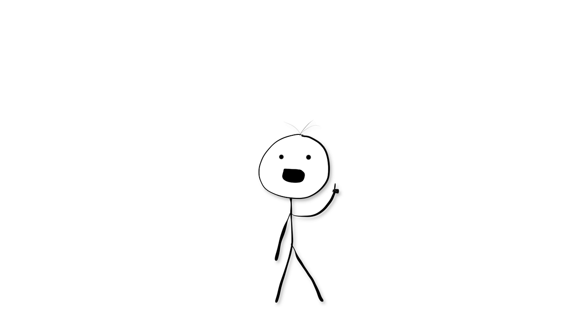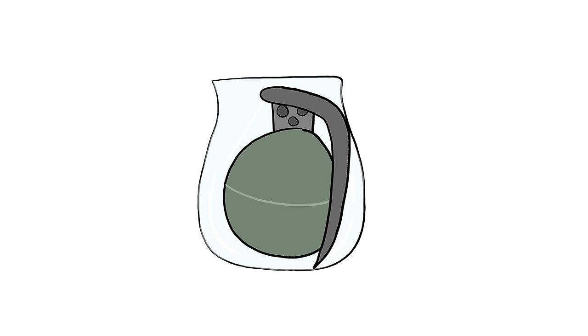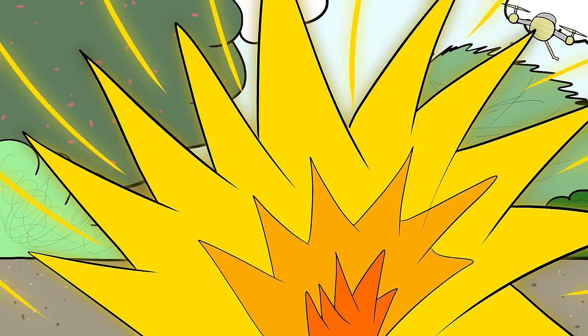Now, a similar tactic that is used today is the Mason Jar Grenade, where a grenade has the safety pin removed, then placed inside of a glass jar, with the lever held down by the wall of the jar. It is then dropped from a drone, causing the glass to shatter and the grenade to explode shortly after.